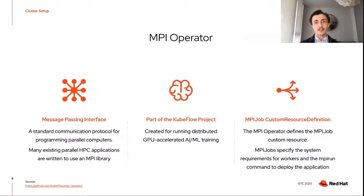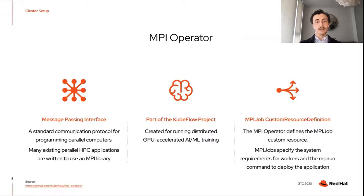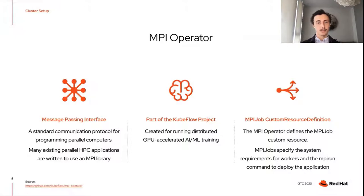The Message Passing Interface, or MPI, is a specification for message passing libraries, and MPI libraries are the de facto standard for writing parallel message passing programs. Many HPC applications including GROMACS are written so that they can be compiled to run across multiple nodes using MPI. The MPI operator enables the easy deployment of MPI programs on Kubernetes and OpenShift. It came out of the Kubeflow project, originally created for running distributed training of machine learning models on GPU nodes. The operator defines the MPI job custom resource. MPI jobs can be created using a YAML manifest which defines the MPI run command, the hardware resources required for worker and launcher pods, and the number of worker pods. Once an MPI job is created, the operator creates the worker and launcher pods and configures them to communicate using the MPI library installed in the containers.